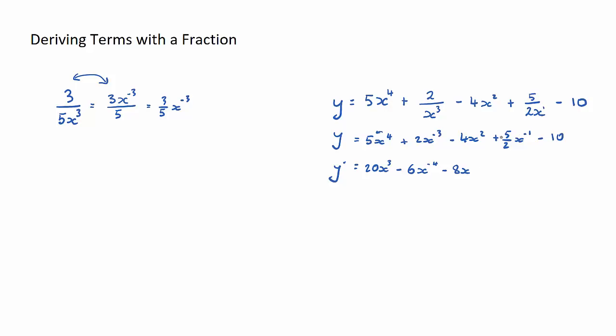Okay, the next term, minus 1 that multiplies by the 5 on 2 to make minus 5 on 2, x to the power of minus 1 minus 1 is actually minus 2. And then when we derive a constant, as I mentioned in the previous video, it just becomes 0, so I don't write anything.